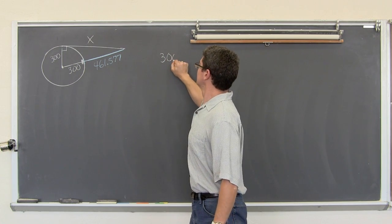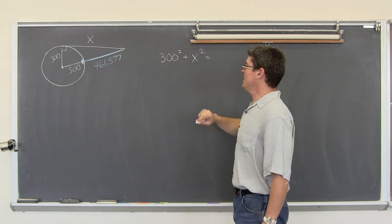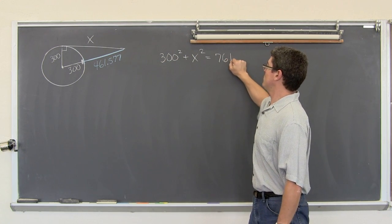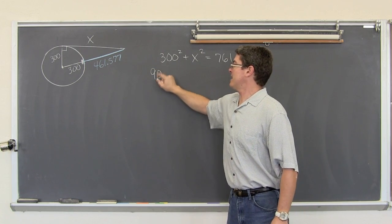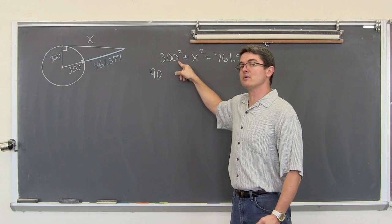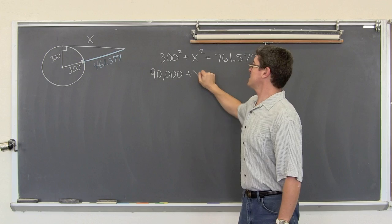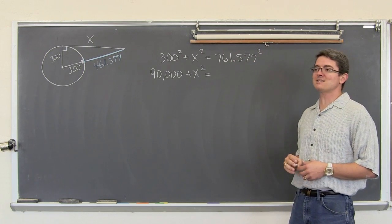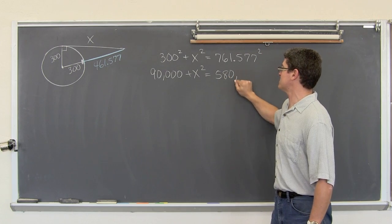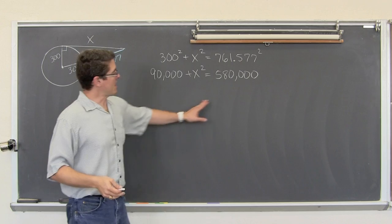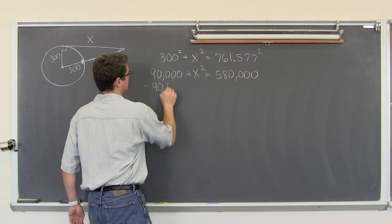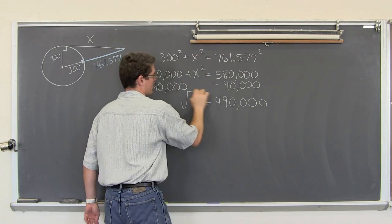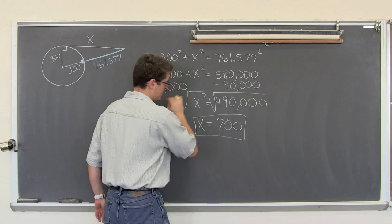This is just as straightforward as any other Pythagorean problem: one leg squared plus the other leg squared equals the hypotenuse squared. Now, 461.577 is not the hypotenuse, nor is 300 — but when you add them you get the hypotenuse of 761.577. So 300 squared is 90,000 plus x squared equals 761.577 squared, which is 580,000. Subtracting 90,000 from both sides gives x squared equals 490,000, and taking the square root gives x equal to 700 — the missing side of the right triangle.